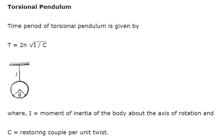Torsional pendulum: in a torsional pendulum, a restoring couple acts on the body. The time period is T = 2π√(I/C), where I is the moment of inertia of the body about the axis of rotation and C is the restoring couple per unit twist. That is why this is called a torsional pendulum.